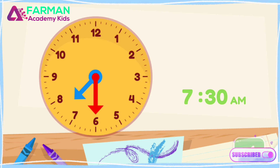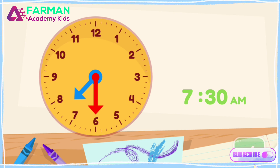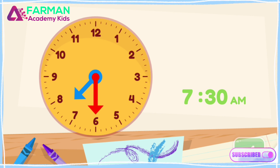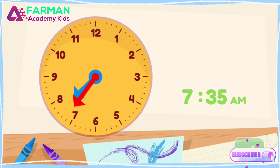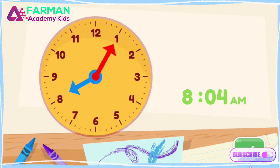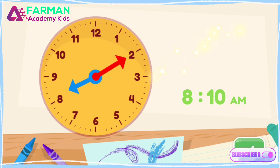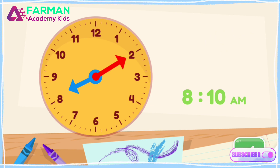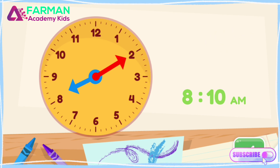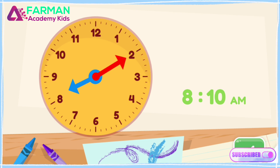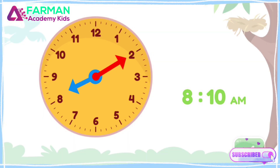Move the minute hand on the round clock to show 8:10 a.m. This is when my school starts. You made the clock show 8:10 a.m. My school starts at this time in the morning.